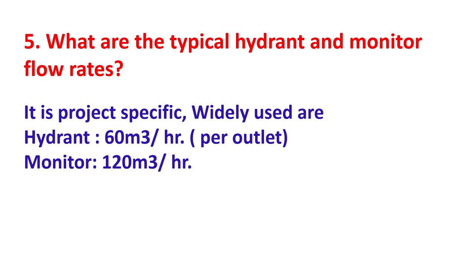What are the typical hydrant and monitor flow rates? It is project specific. Widely used values are: for a hydrant, 60 cubic meters per hour per outlet; for a monitor, 120 cubic meters per hour.